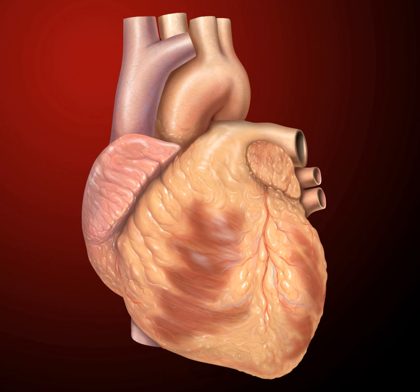Some arise from the atria, e.g. atrial flutter; some from the atrioventricular node, e.g. AV nodal re-entrant tachycardia; whilst others arise from the ventricles, e.g. ventricular tachycardia. Some tachyarrhythmias are caused by scarring within the heart, others by an irritable focus e.g. focal atrial tachycardia, while others are caused by additional abnormal conduction tissue present since birth, e.g. Wolff–Parkinson–White syndrome.